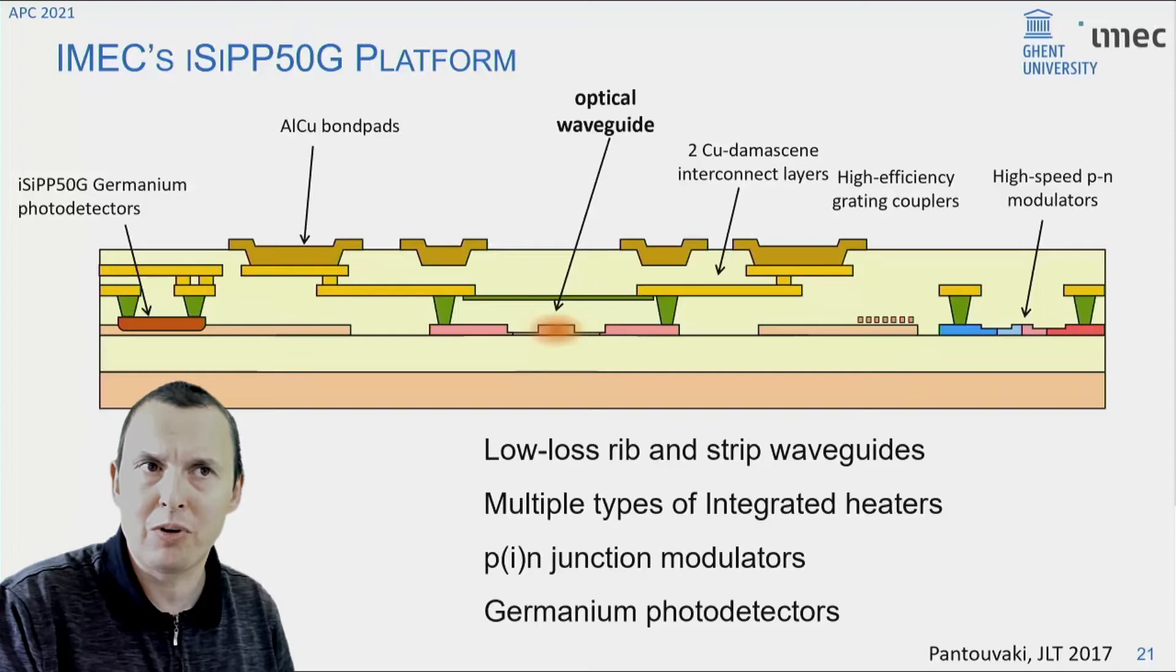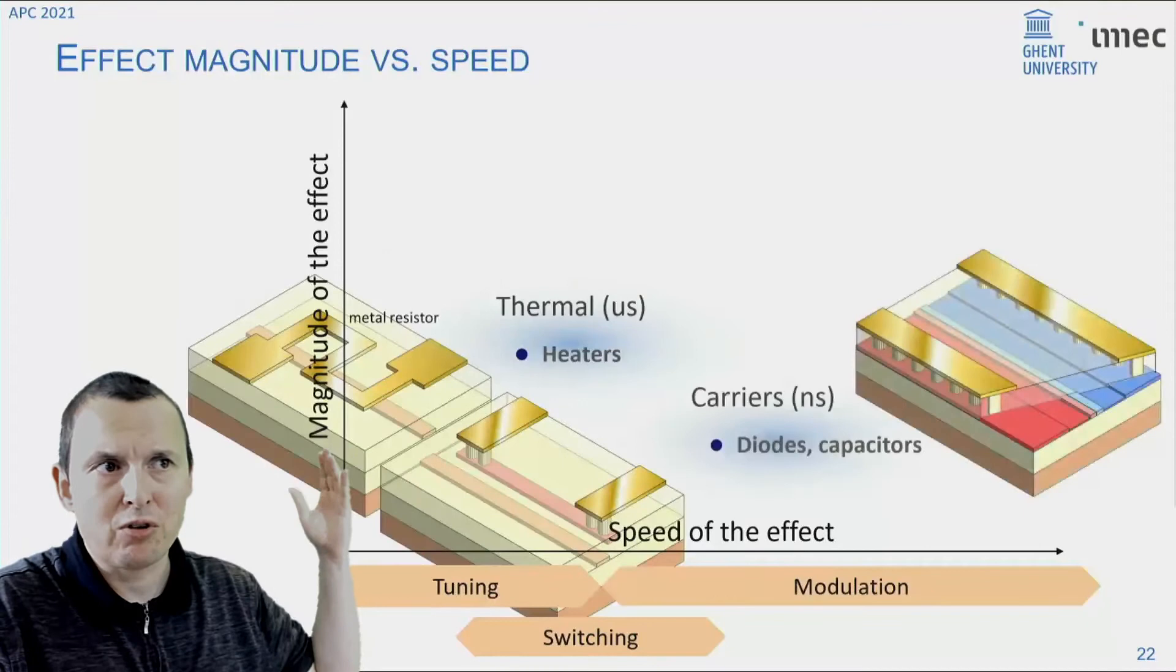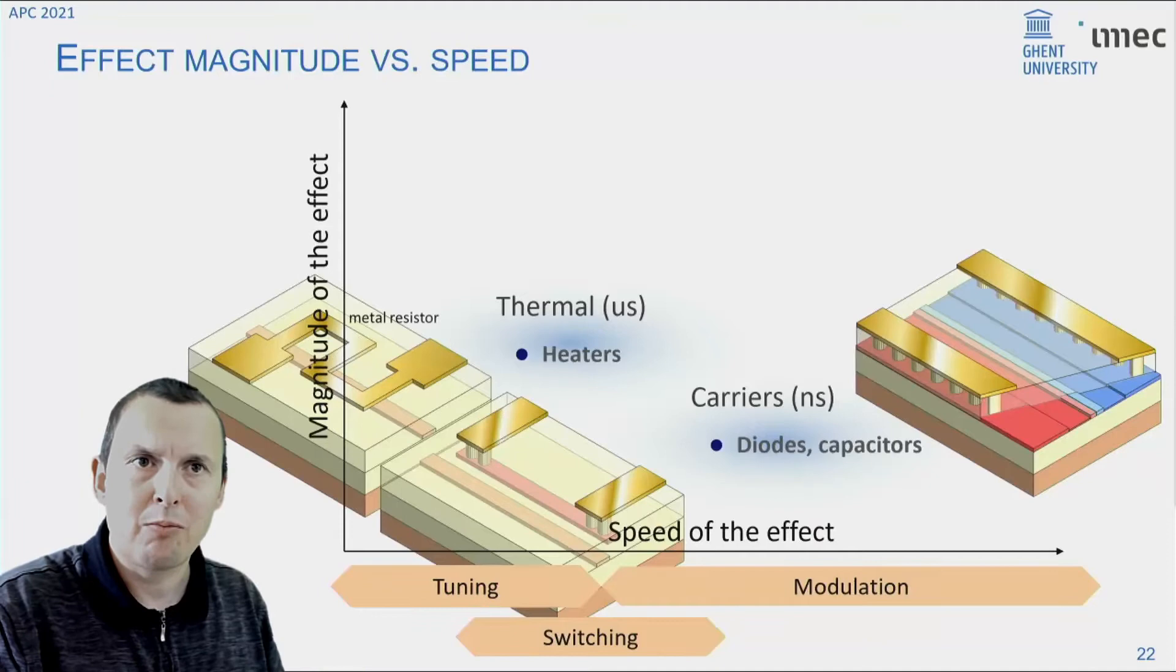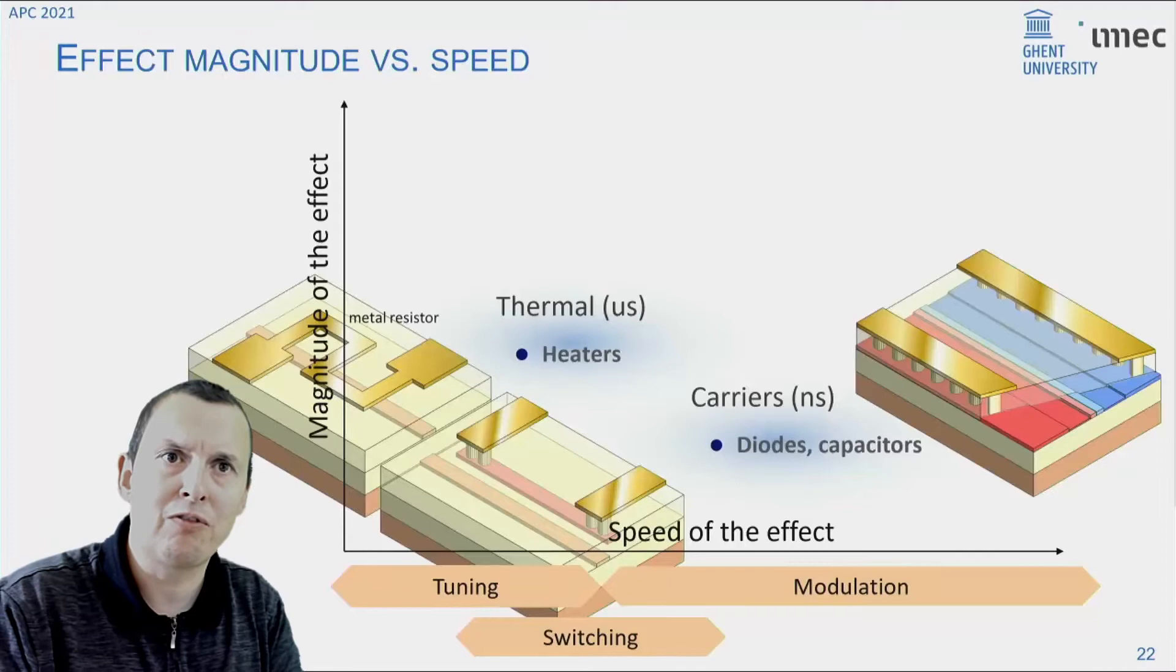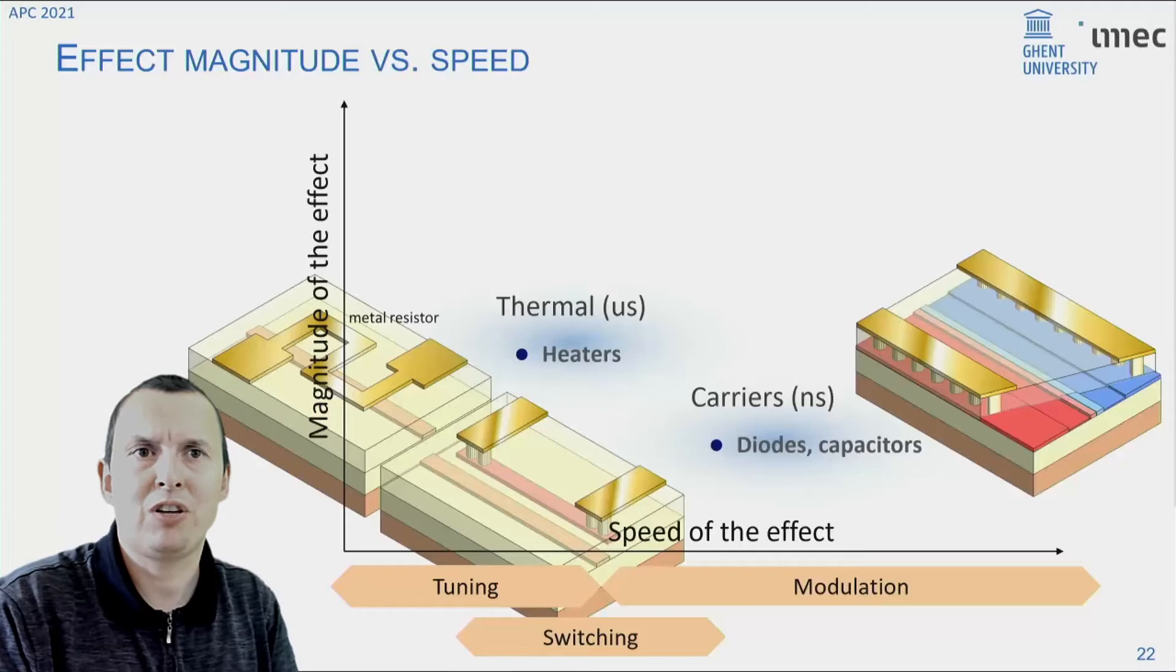So in order to build all these good actuators, you need to be able to integrate it into a silicon photonics platform. And the platform that we have been using in Morphic is IMEC's silicon photonics platform called ISIPP50G, which has all the typical bells and whistles that you find in today's silicon photonics, which is waveguides of different types, ribs and strip waveguides, germanium photodetectors, high speed modulators, high efficiency grating couplers.